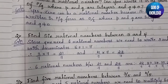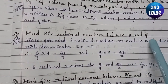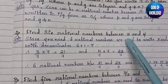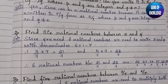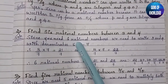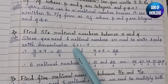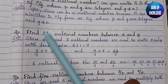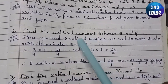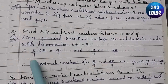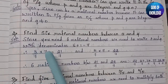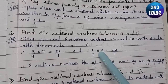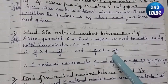The second question: find six rational numbers between 3 and 4. Since we need six rational numbers, we write 3 and 4 with denominator six plus one, which gives us seven. So we multiply both numbers by 7: three times seven gives 21/7, and four times seven gives 28/7.